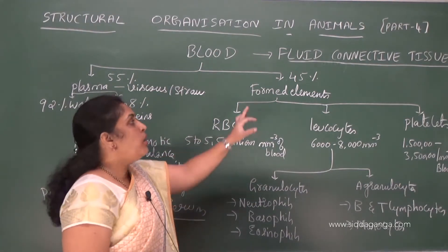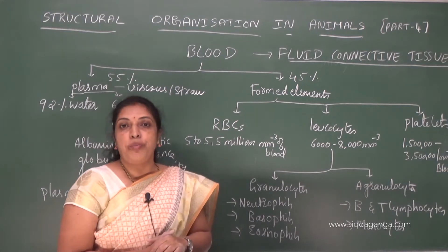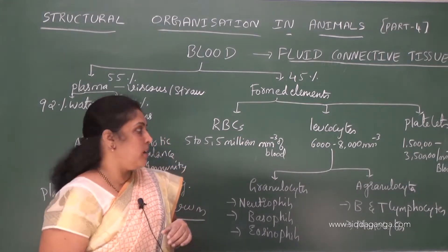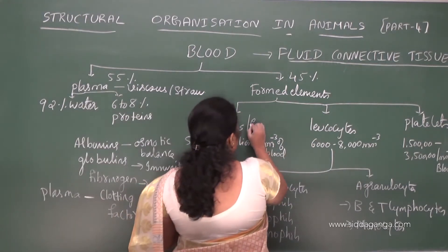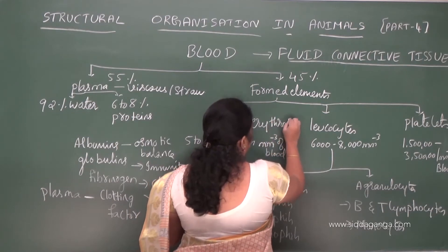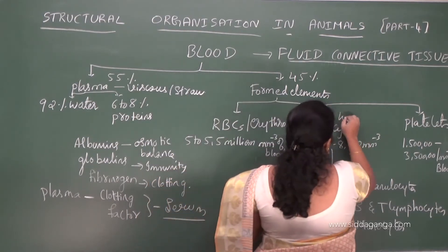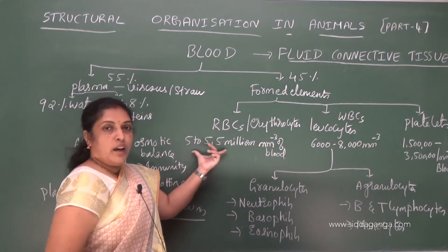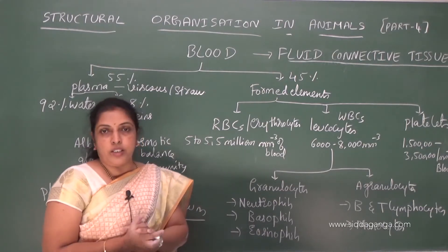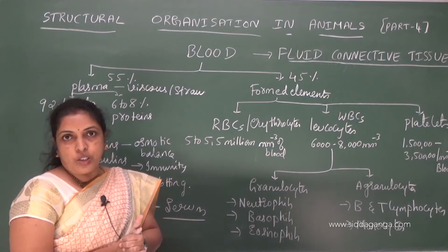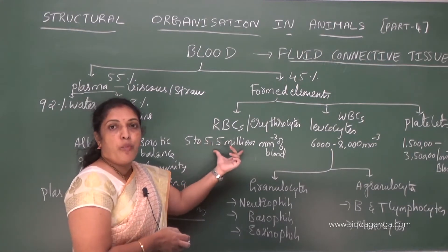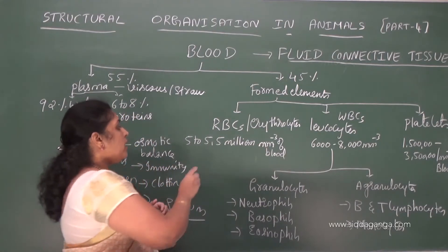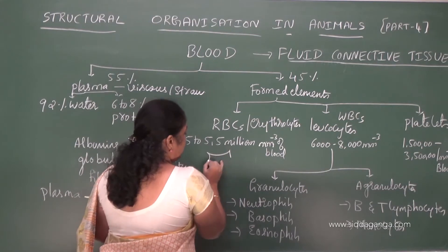Coming to the formed elements — nearly 45 percent of blood consists of formed elements like RBCs, leukocytes, and platelets. RBCs are also called erythrocytes. There are nearly 5 to 5.5 million RBCs per cubic millimeter of blood. Each RBC is biconcave in shape.